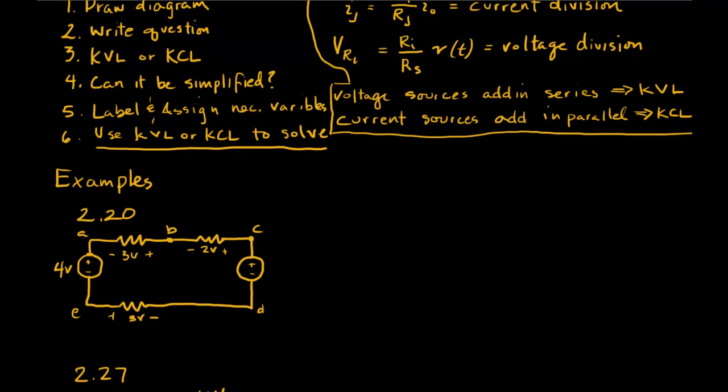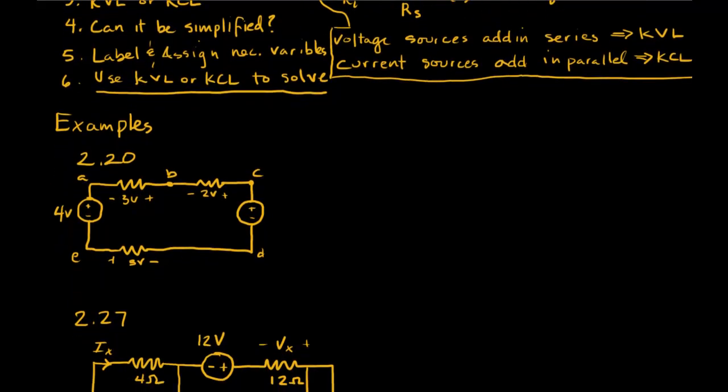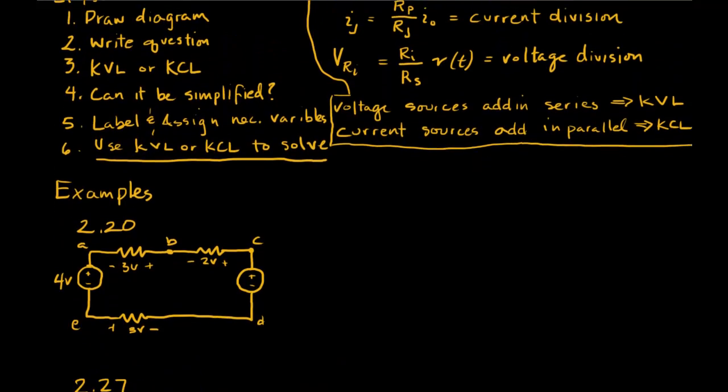So let's just take a look at some random problems from the chapter. 2.20 is a question that is asking us to find VAD in the network. So first we draw it, and then we write the question, VAD. This is a single loop. There are no node pairs, so certainly we're going to want to use KVL for this equation.